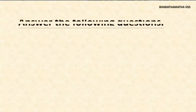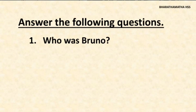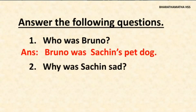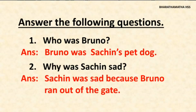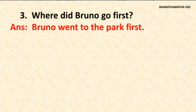Now give the title: answer the following questions. The first question is: who was Bruno? The answer is: Bruno was Sachin's pet dog. Now leave a line and write question number 2: why was Sachin sad? Sachin was sad because Bruno ran out of the gate. Write the third question: where did Bruno go first? Bruno went to the park first.